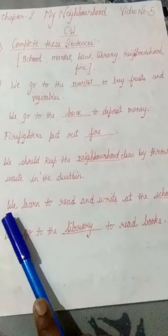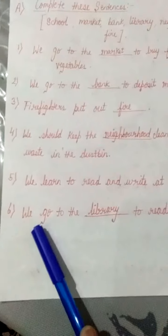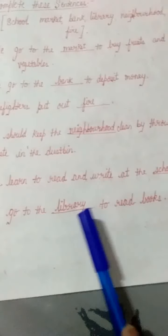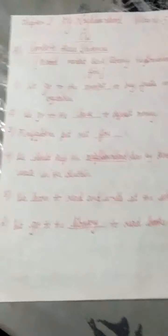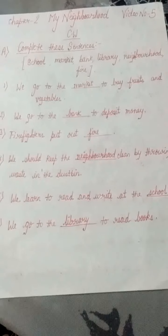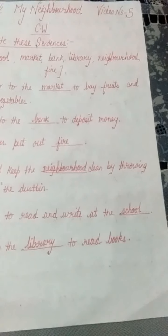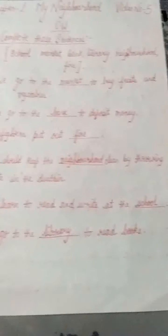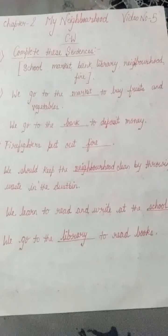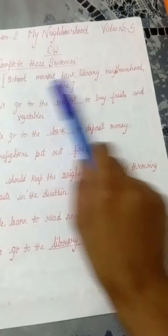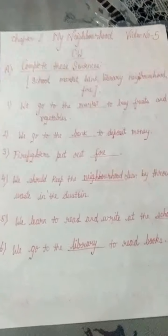Number 5: we learn to read and write at school. Number 6: we go to the library to read books — there are many books in the library. Please note down and complete these sentences carefully, filling all the blanks from the help box only. See where the correct answer fits and put it in.